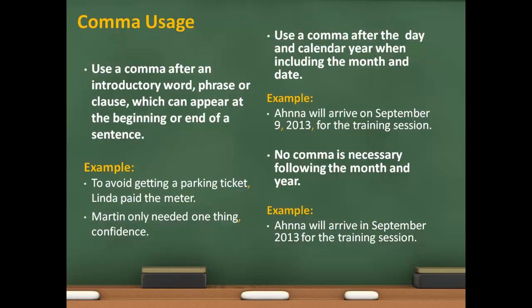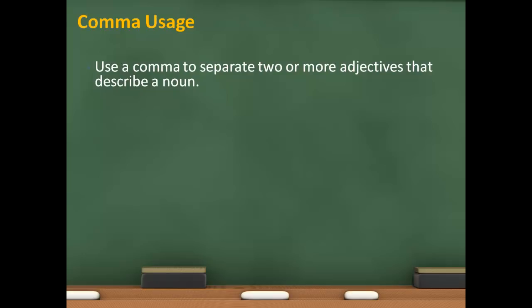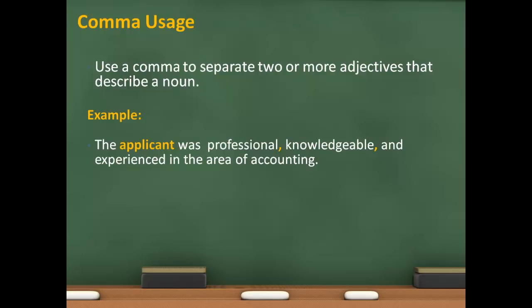Use a comma to separate two or more adjectives that describe a noun. For example, the applicant was professional, knowledgeable, and experienced in the area of accounting. Texas is a hot, dry state.